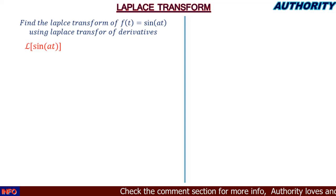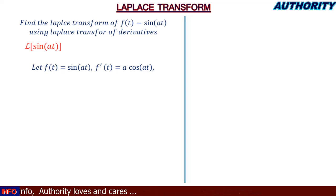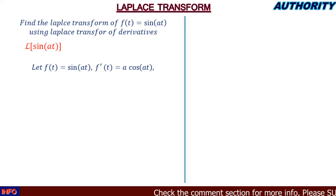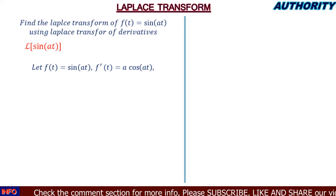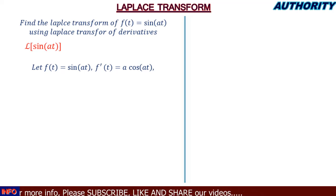Let's go. We let f(t) = sin(at). Since we're using the Laplace transform of derivatives, we differentiate. The first derivative f'(t), differentiating sin(at) with respect to t, gives us a·cos(at).